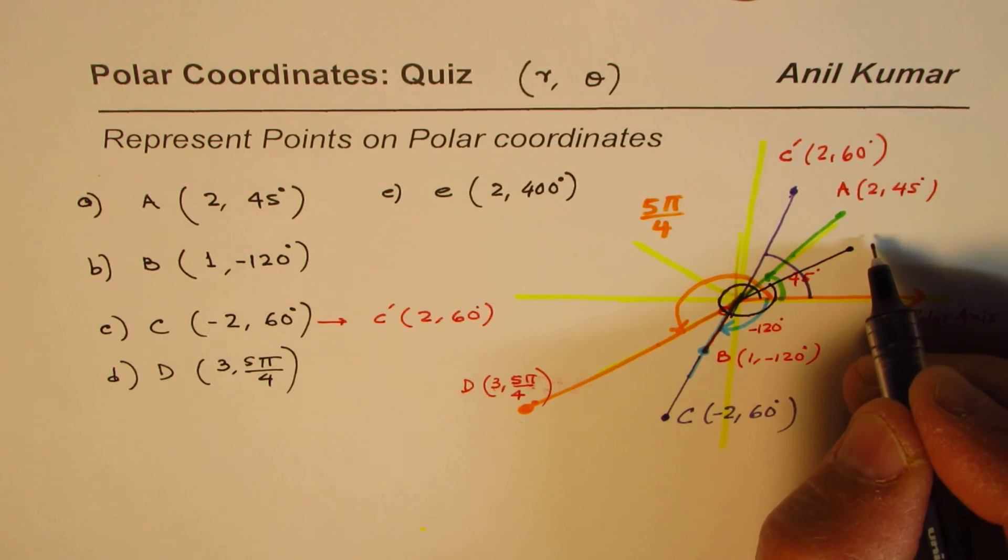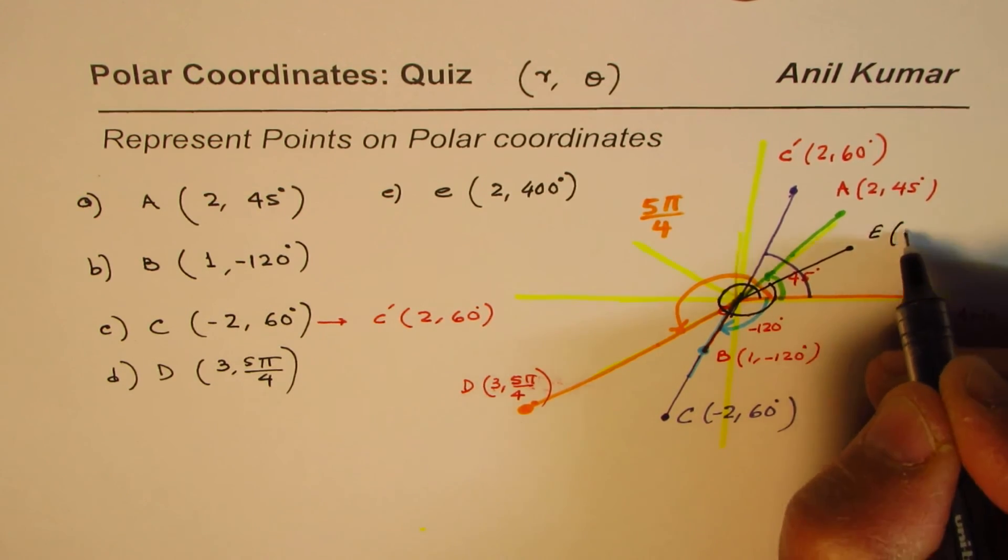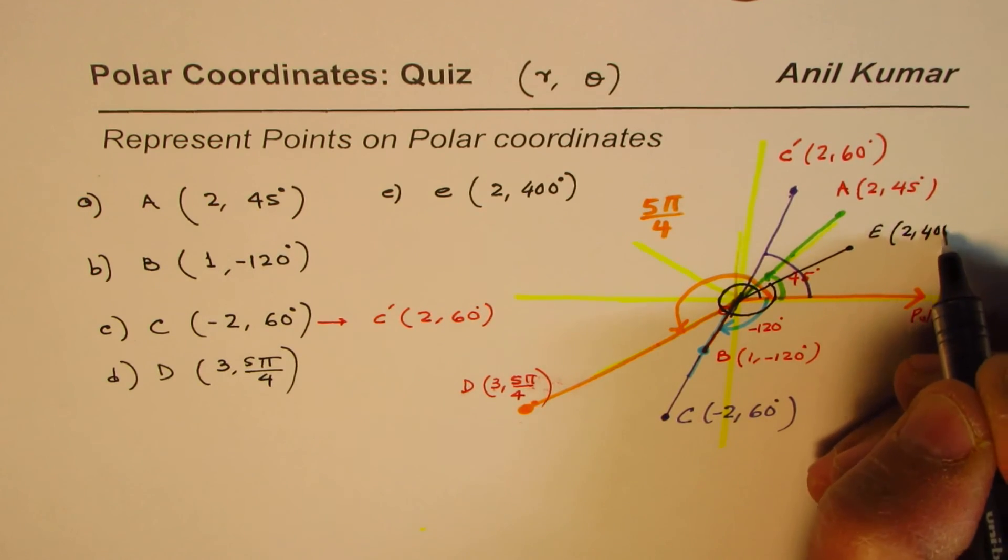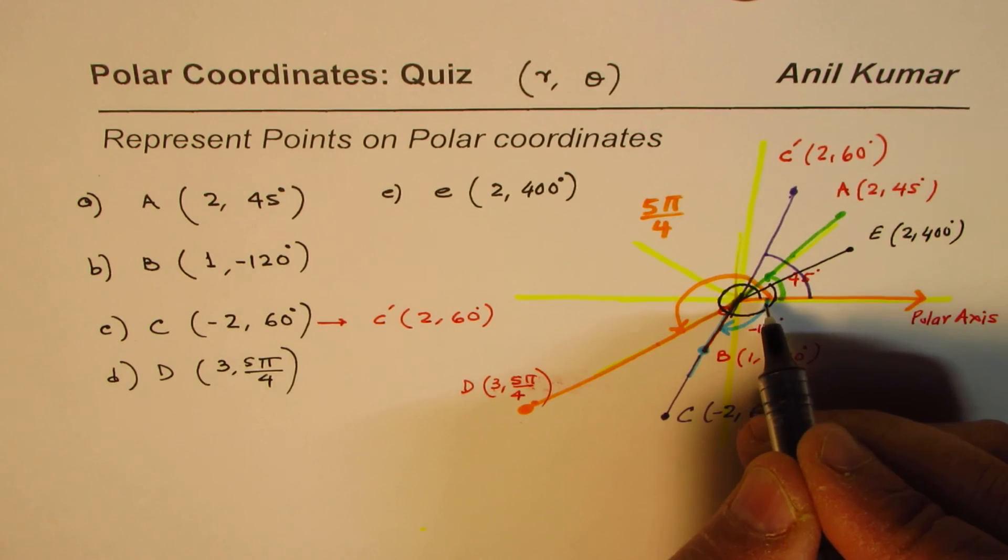And magnitude is 2, so this point here will represent E, which would be (2, 400°). But you have to show these circles showing that you've gone one full circle and then 40 more. So likewise, you could do angles even more than 360 or 2π.